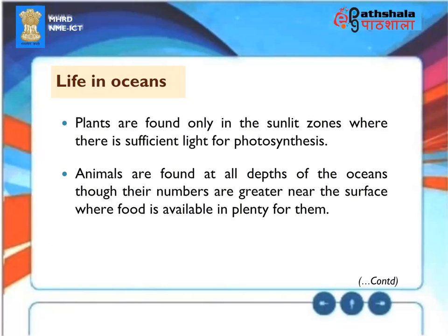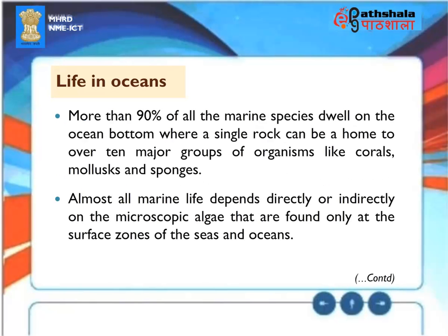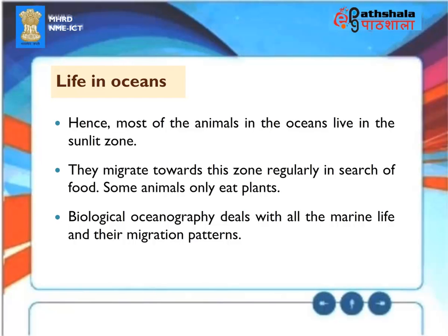Life in Oceans: Plants are found only in the sunlit zones where there is sufficient light for photosynthesis. Animals are found at all depths of the oceans, though their numbers are greater near the surface where food is available in plenty. More than 90% of all marine species dwell on the ocean bottom where a single rock can be home to over 10 major groups of organisms like corals, mollusks and sponges. Almost all marine life depends directly or indirectly on the microscopic algae found only at the surface zones. Most ocean animals migrate towards this zone regularly in search of food.